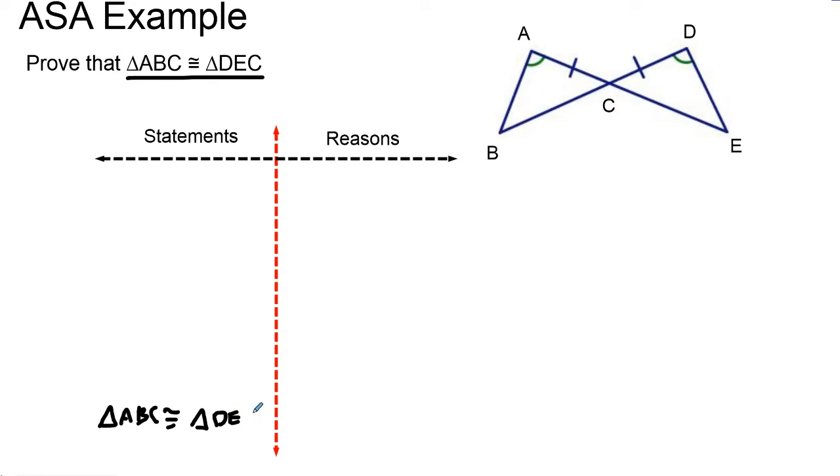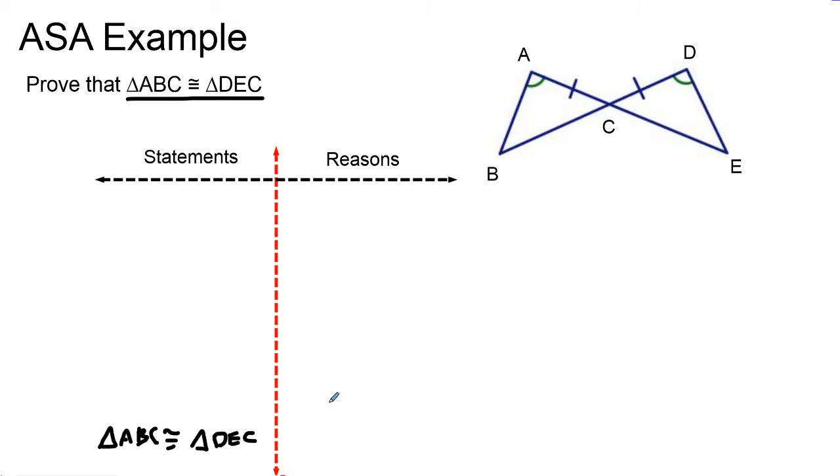I am going to write down my given information. I know that angle A is congruent to angle D. The reason I'm going to write for that is that it is given—it's marked on the diagram.